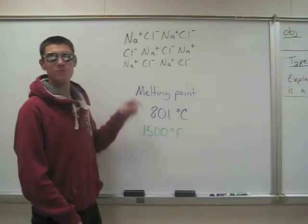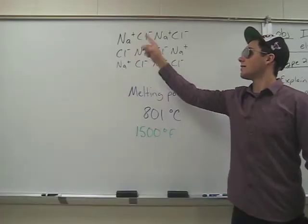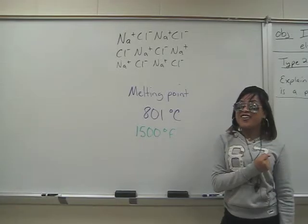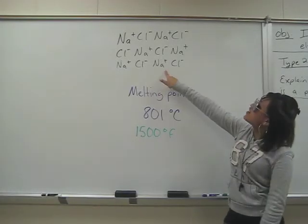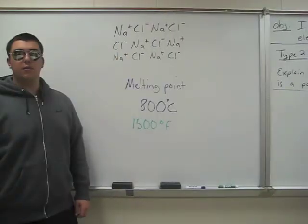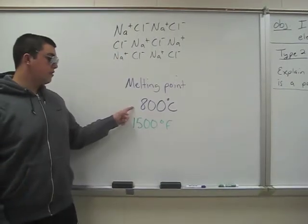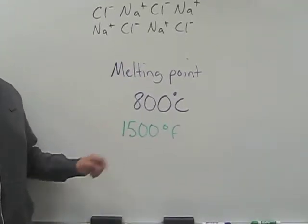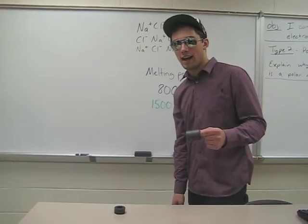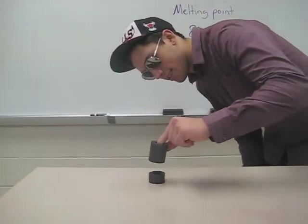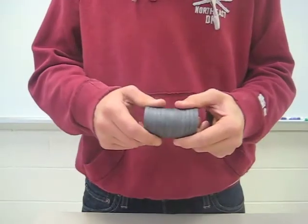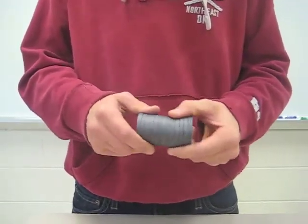Salt is a solid at room temperature because Na is positive and Cl is negative. In nature, opposites attract, so Na is strongly attracted to Cl, and that's why all these particles are so close together. The melting point of salt is about 800 degrees Celsius, or 1500 degrees Fahrenheit. Think of these particles as magnets — opposites attract. Particles in a solid can vibrate but they cannot move freely.